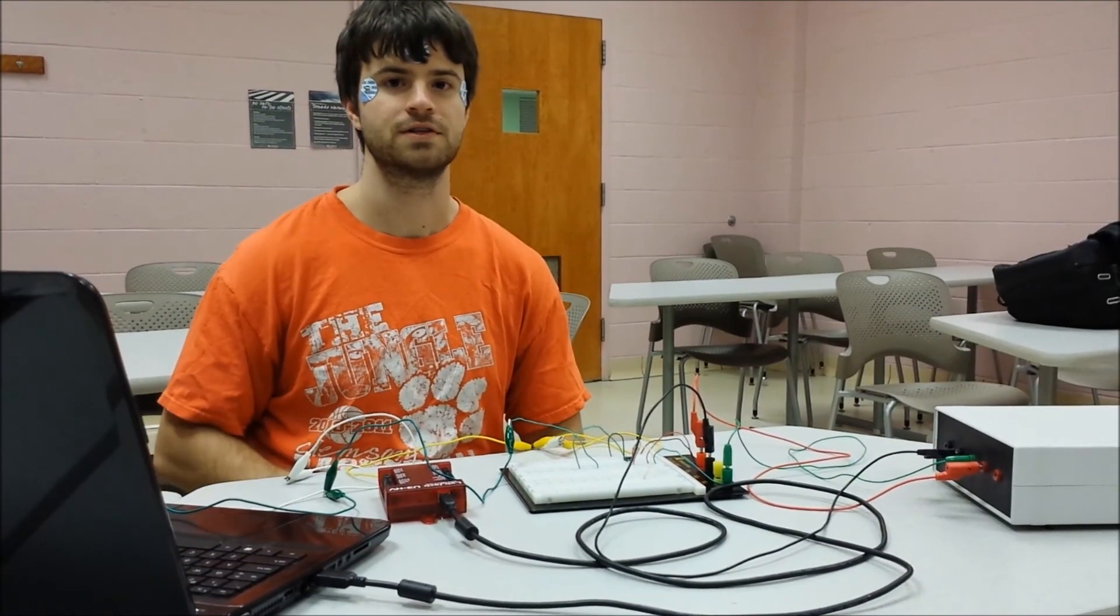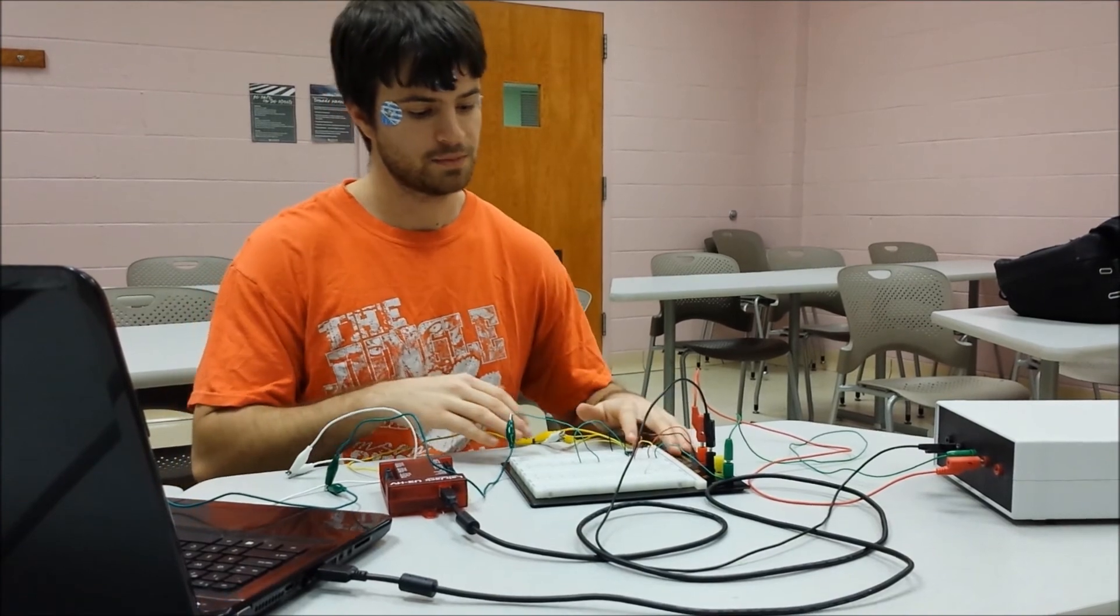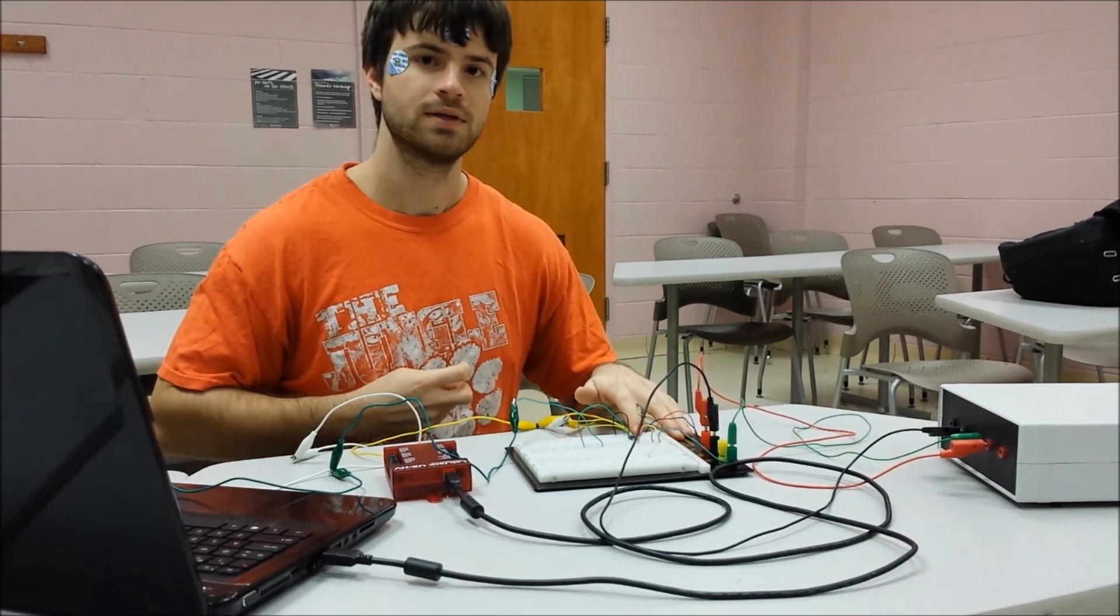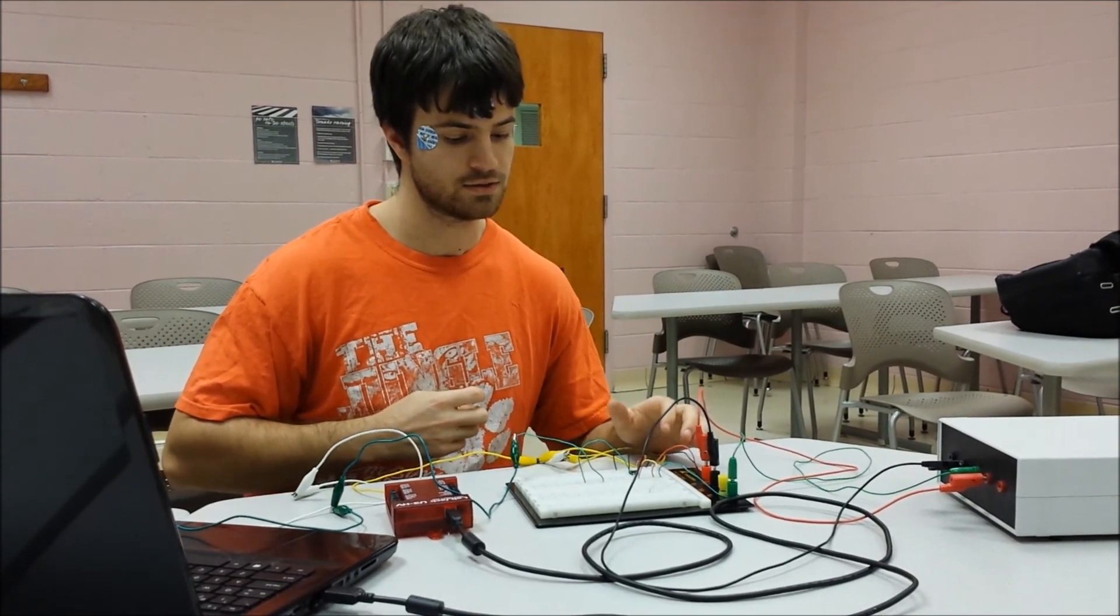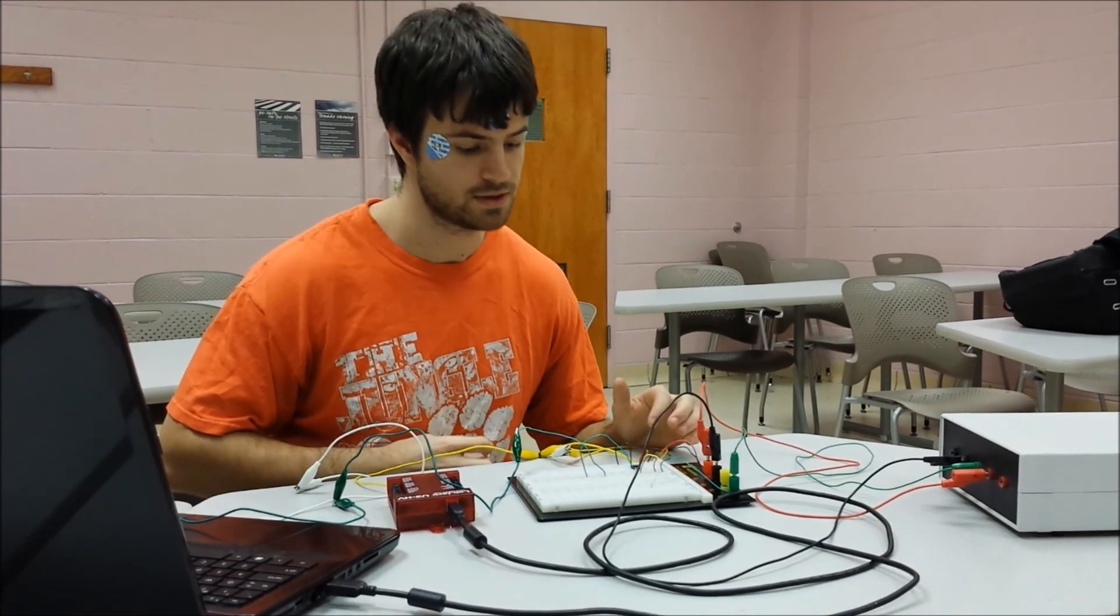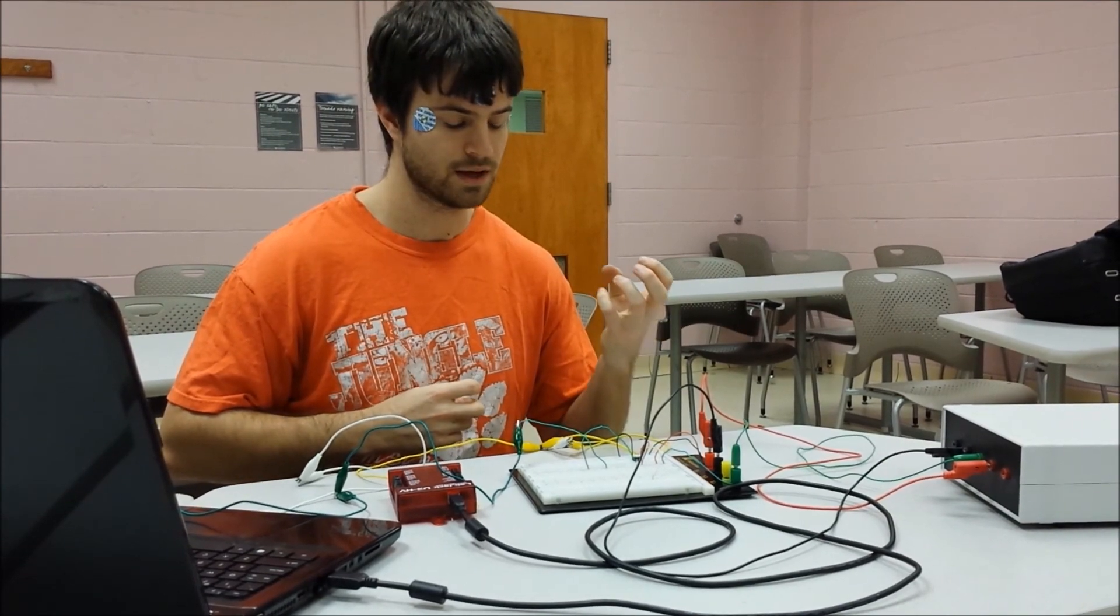Alright, so what we have here is our physical setup. What we have on the breadboard here is an INA126P, which is an instrumentation amplifier. The gain is set to approximately six, using an 82K resistor across the gain.